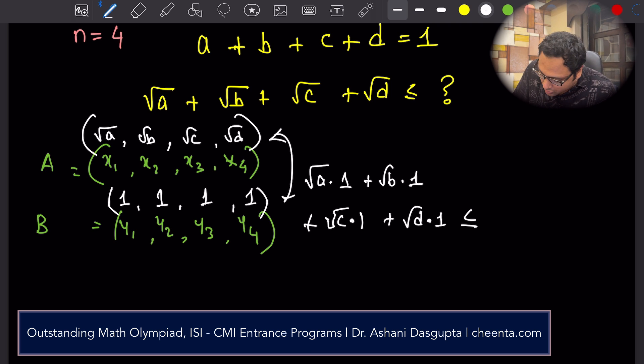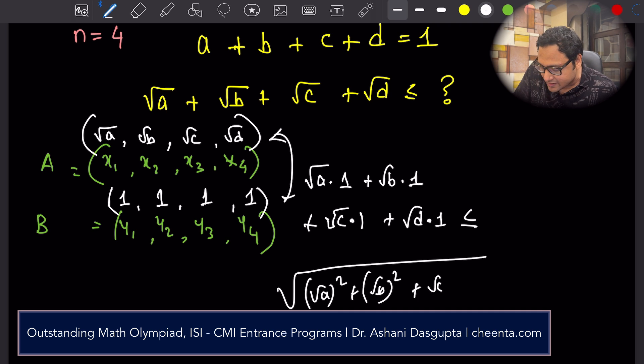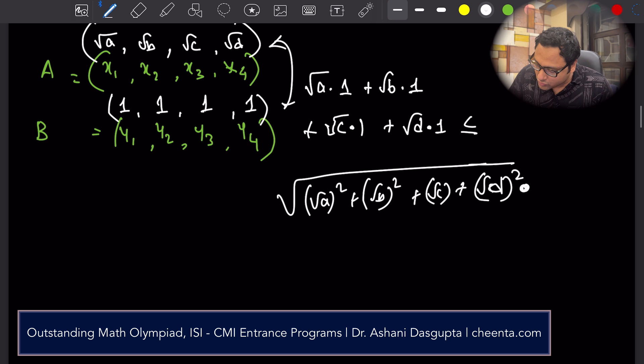So you take the square root of, square root of a whole square, square root of b whole square, square root of c whole square, square root of d whole square